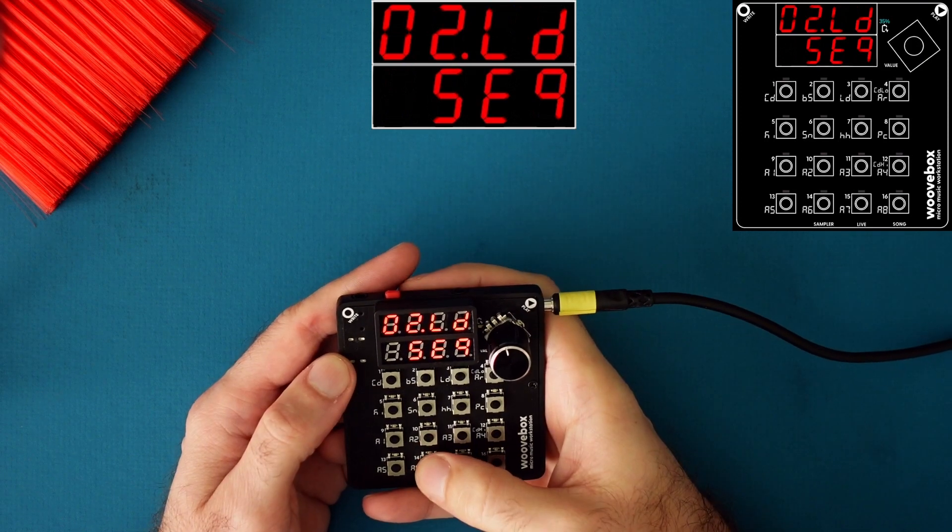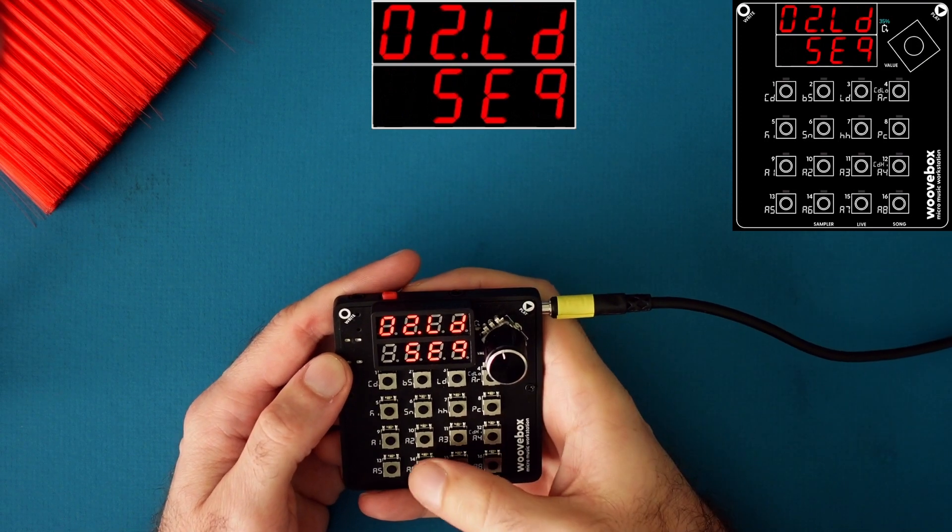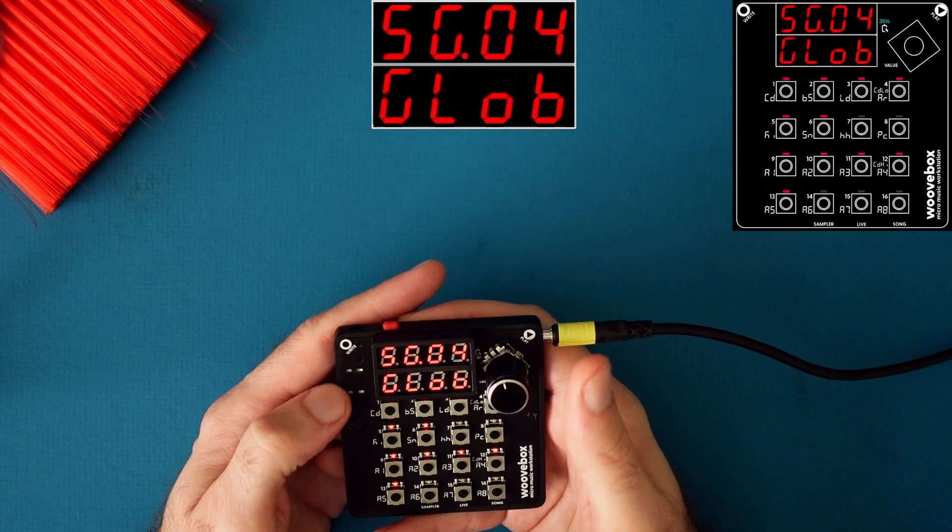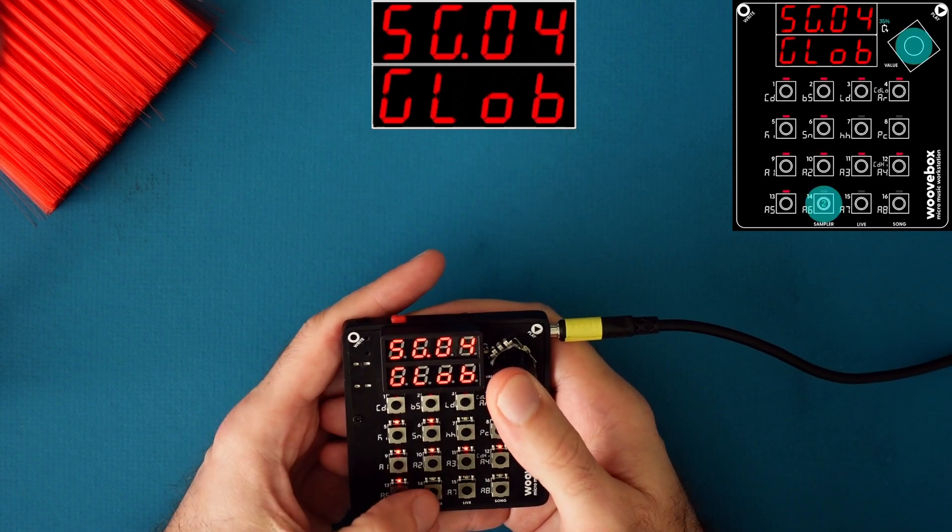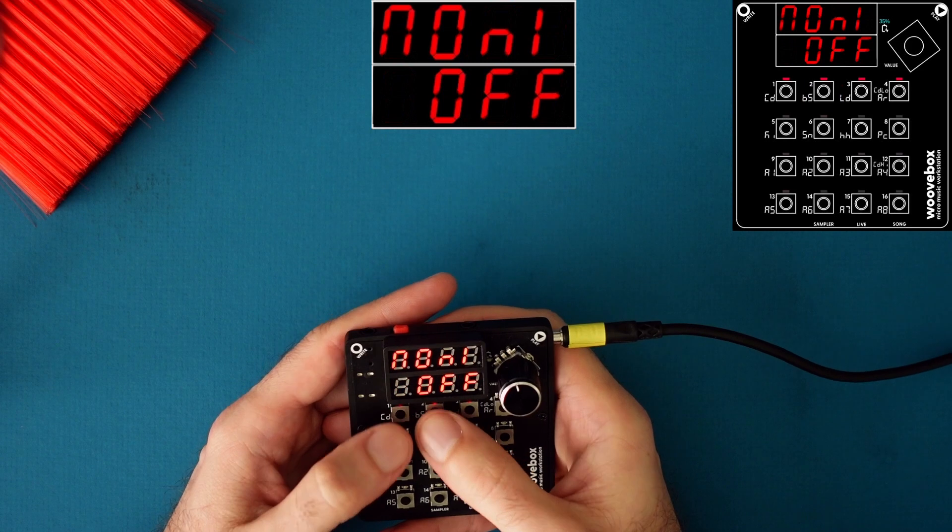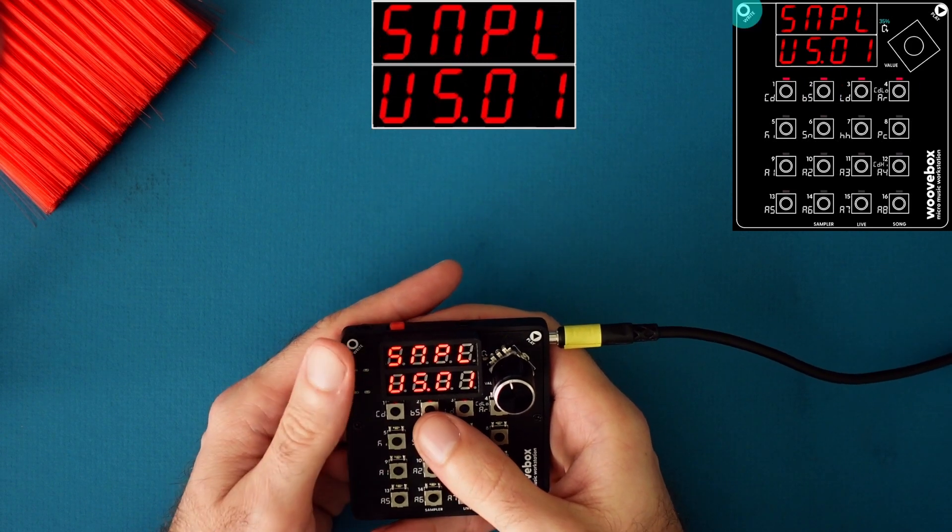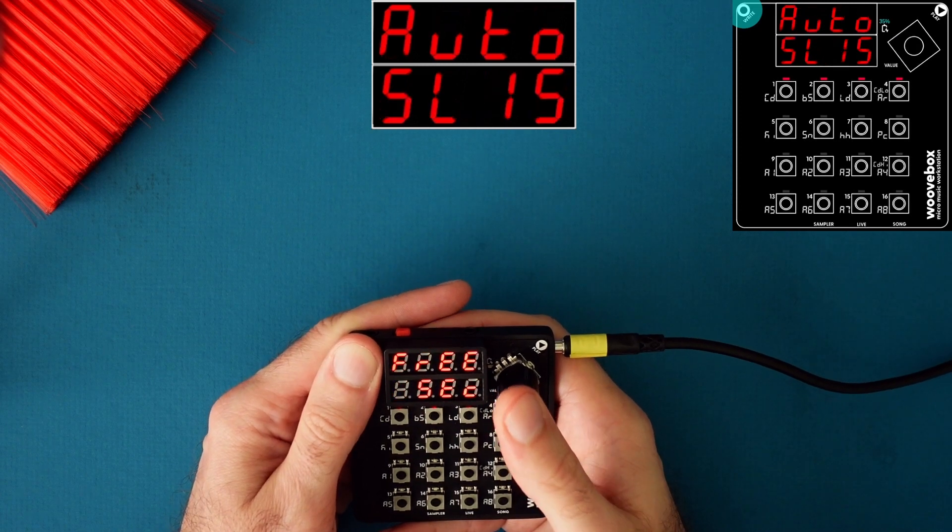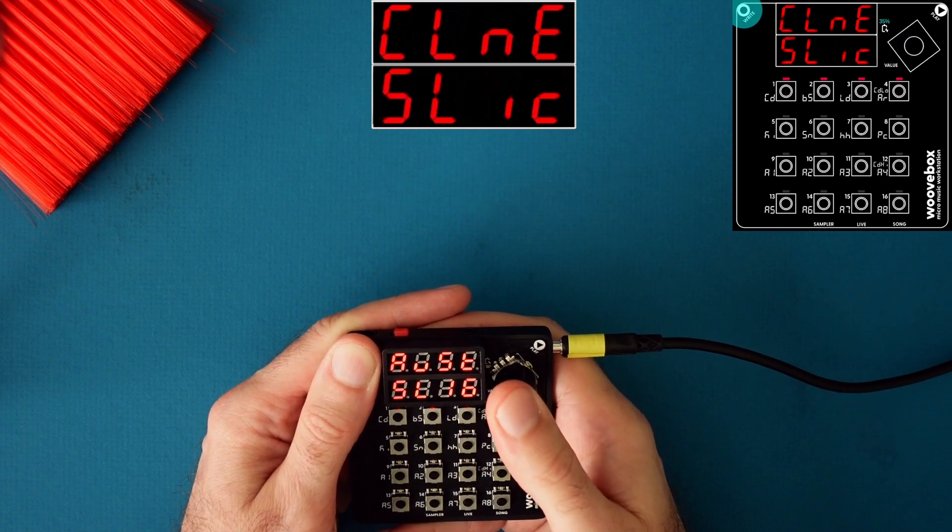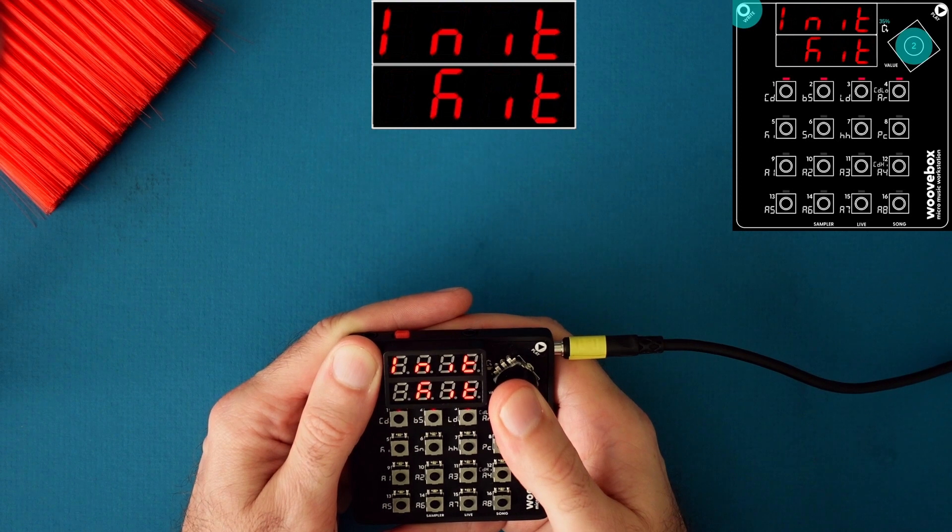This also works on the sampler, but it's a little bit different. The sampler has its own undo feature. So enter the sampler by holding the encoder and pressing sampler. And I am now in the sampler. And let's say I'm going to initialize this kit. Here we go.